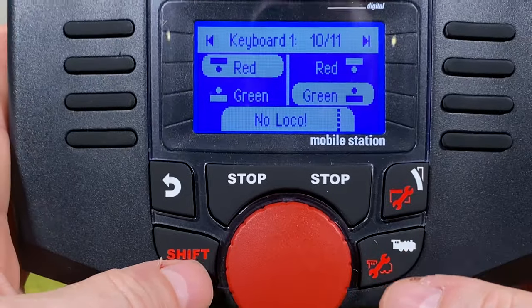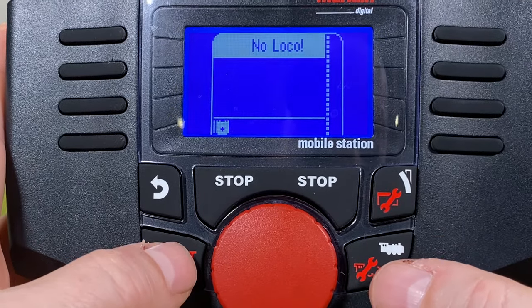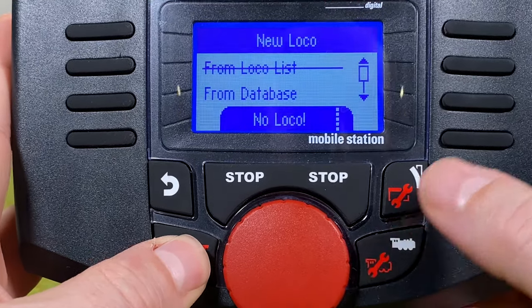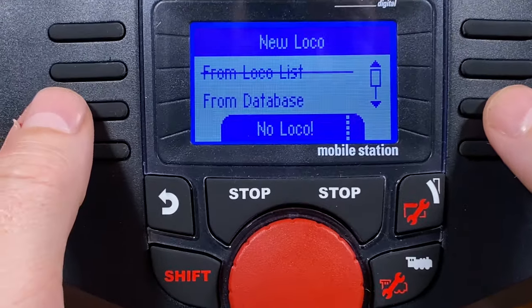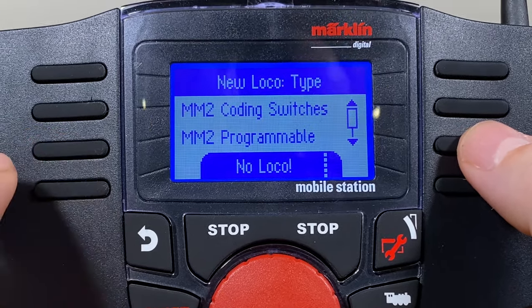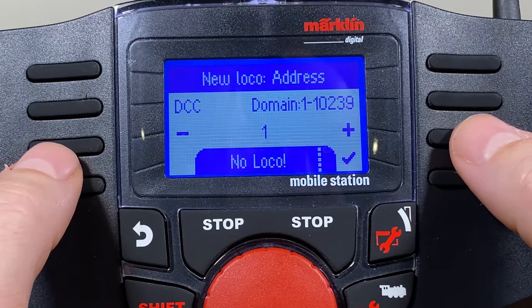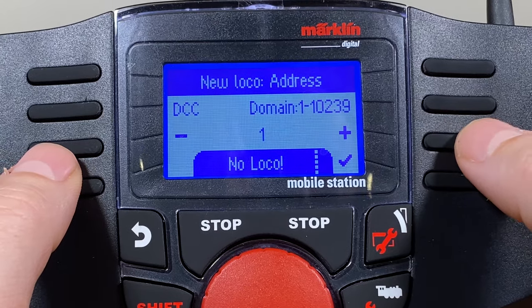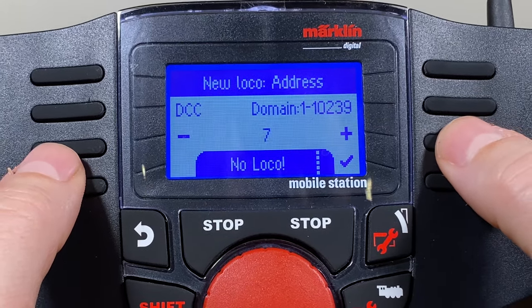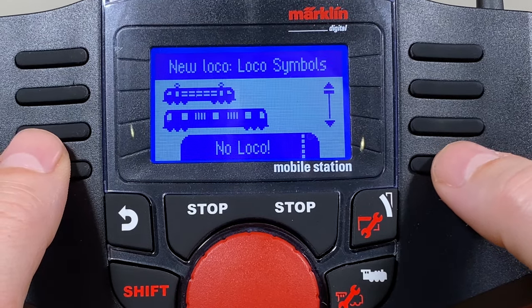I want to do the programming now. I do that by finding an empty locomotive spot. I hit shift locomotive to program. To add a locomotive I should say. I go in into manually. I continue down till I find DCC. I click DCC and now I want address 10. So we choose address 10. I hit the check mark. I don't care about the name. I just assign it a symbol.